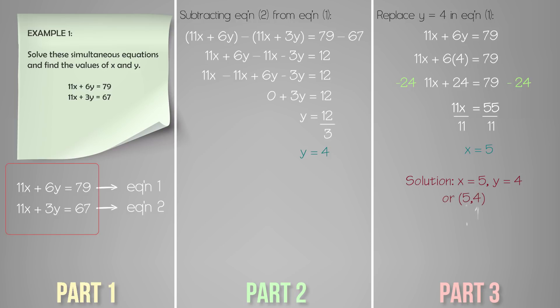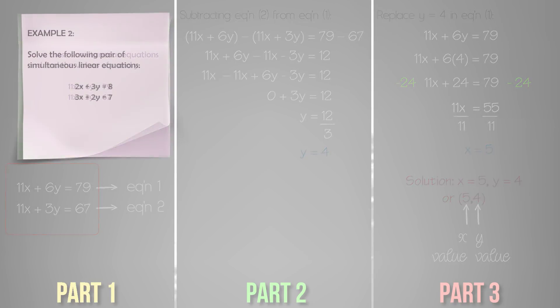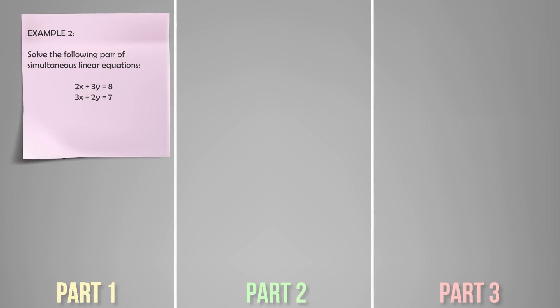So the solution is x equals 5 and y equals 4, or written as a coordinate pair: (5, 4). Let's look at a second example: solve the following pair of simultaneous linear equations. We have equation 1: 2x plus 3y is equal to 8, and equation 2: 3x plus 2y is equal to 7.